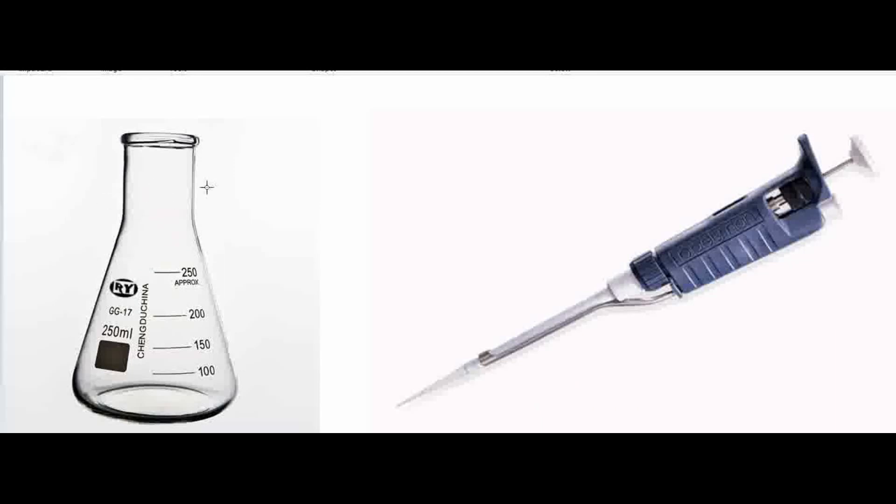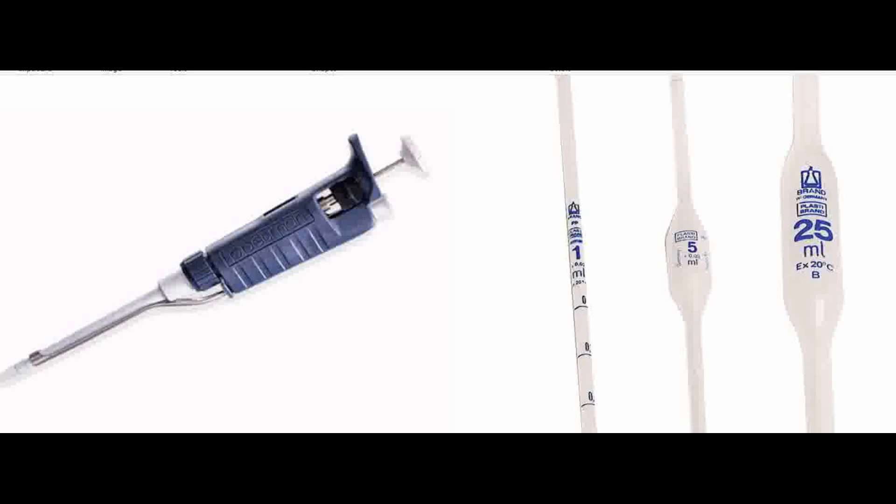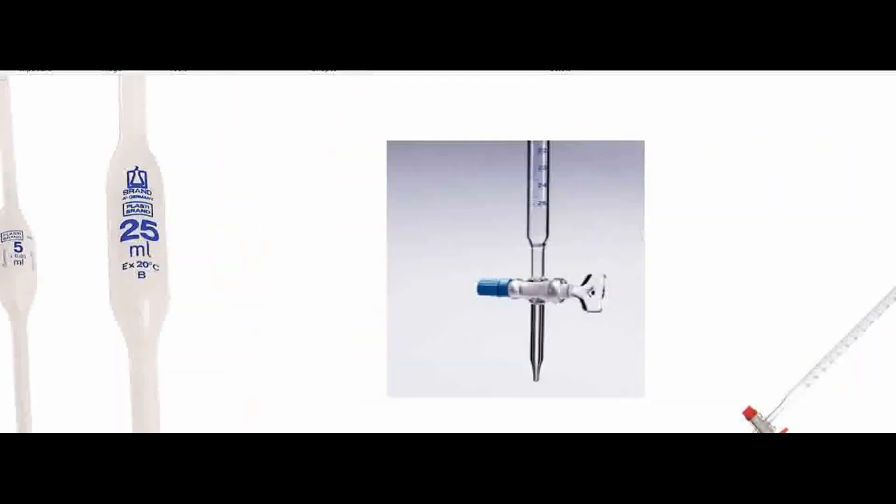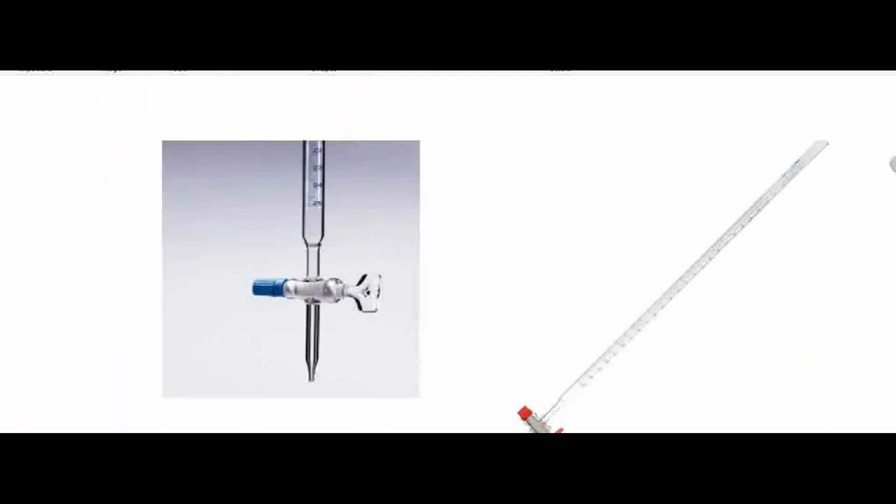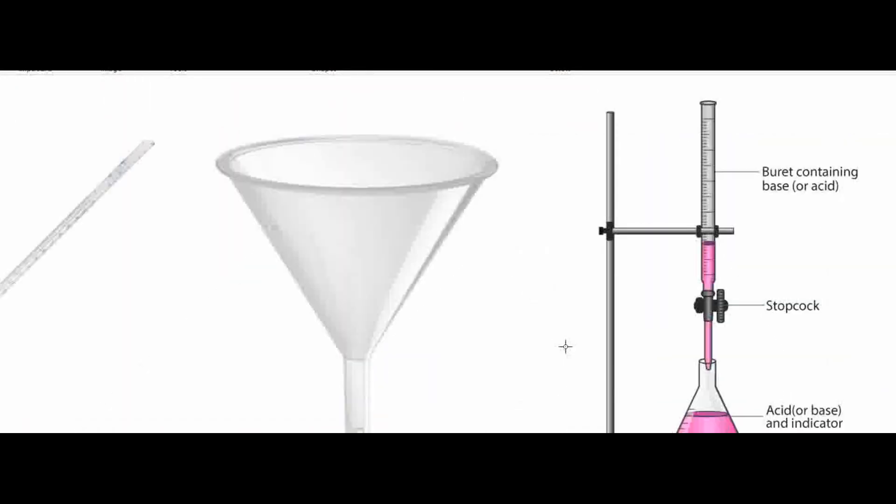Now let's look at the apparatus you need for a titration. Here we have our conical flask, also known as an Erlenmeyer flask. We have pipettes, you might see them looking like this or like this. We have our volumetric burette, filter funnel, and this is how you would set it up with the retort stand and the clamp.